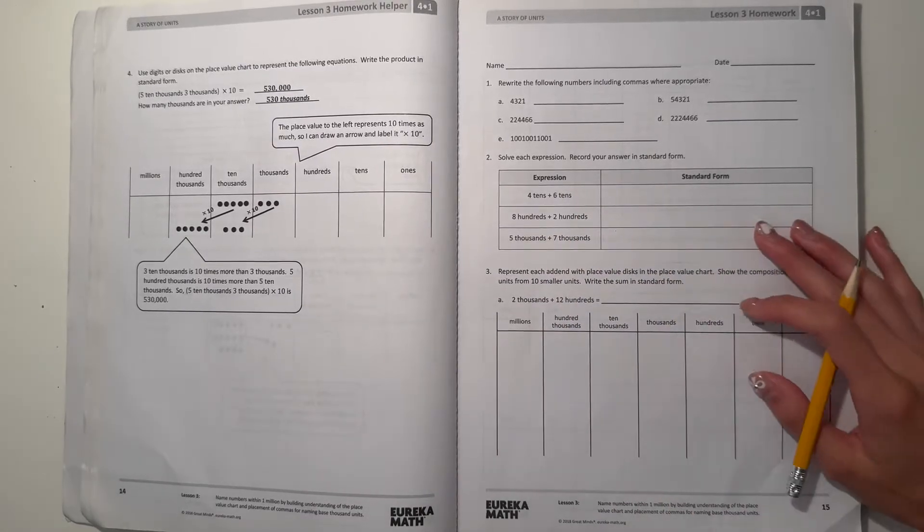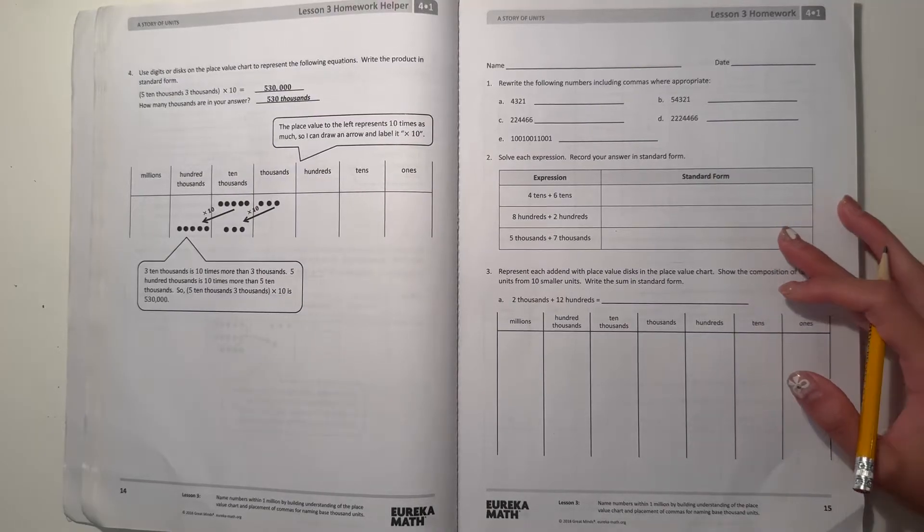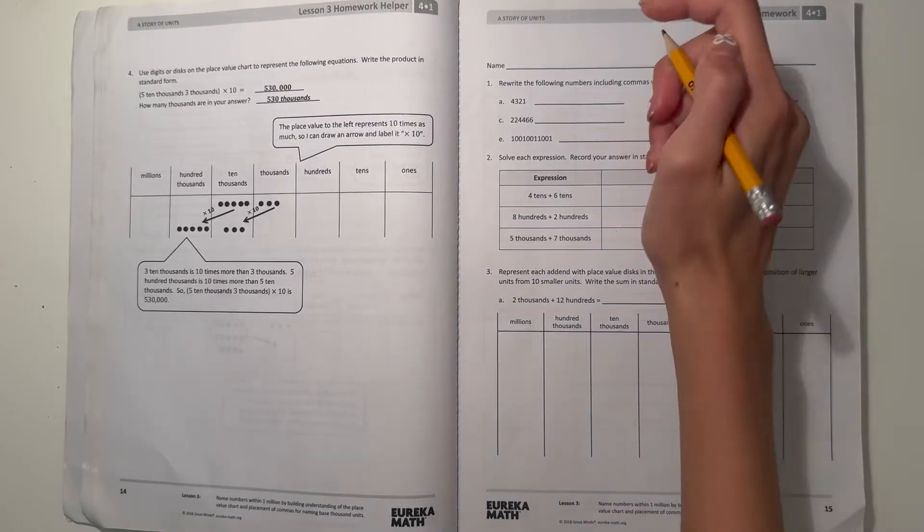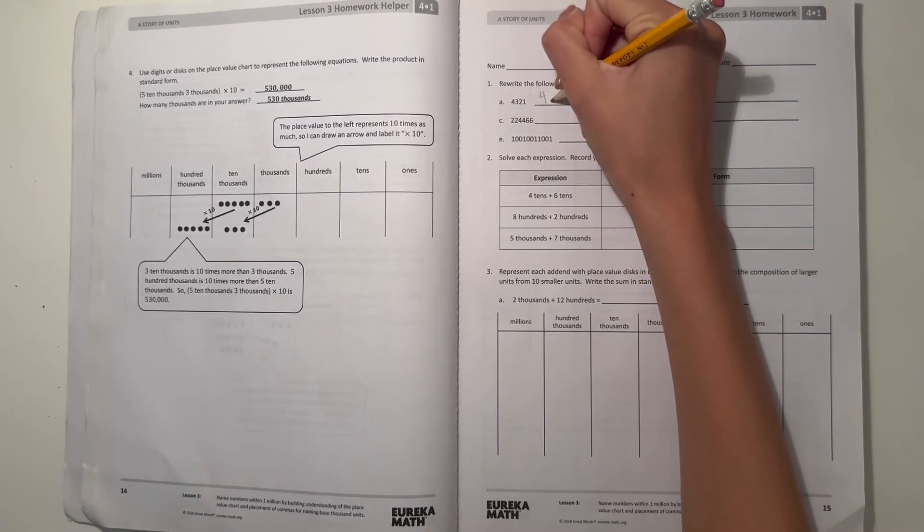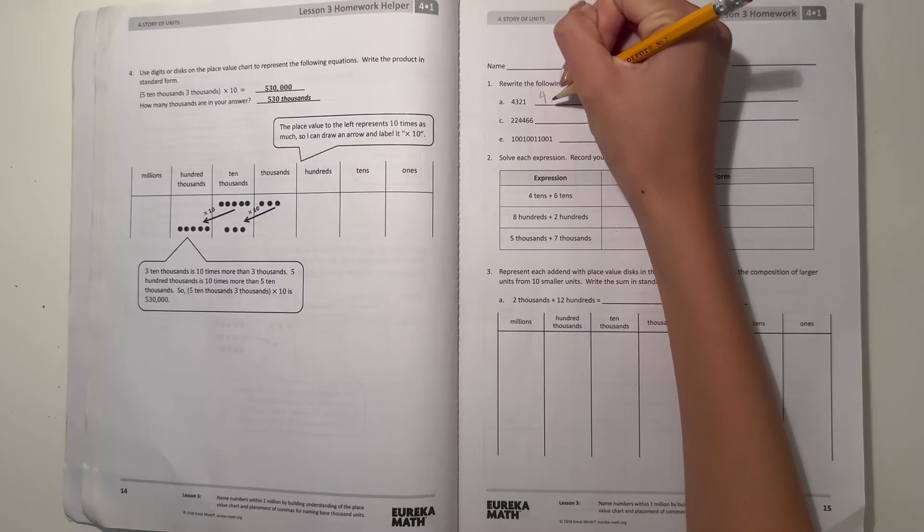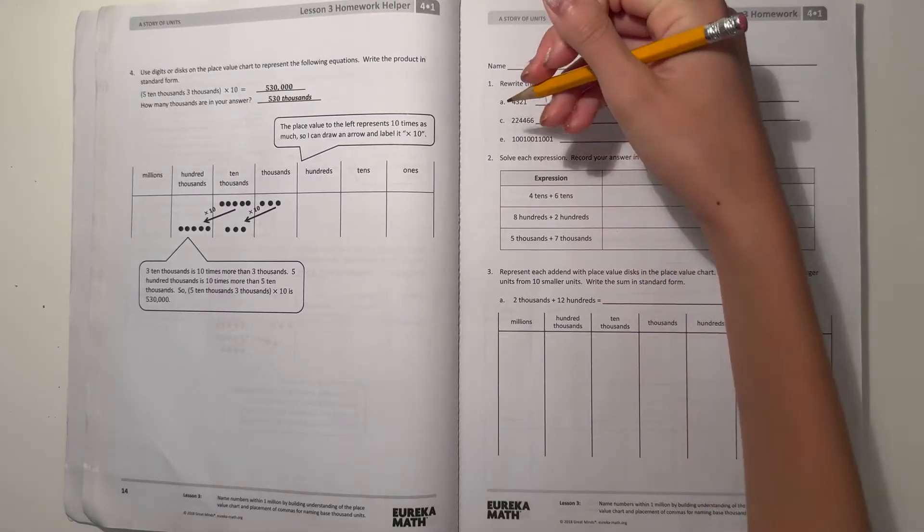Number 1. Rewrite the following numbers including commas where appropriate. All right, so first we have 4,321. We have 4,321, so for thousands our commas would go here.